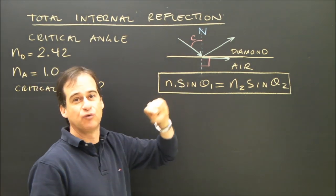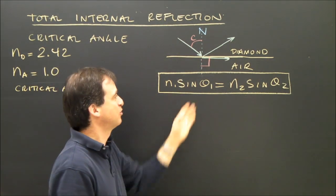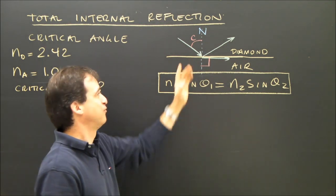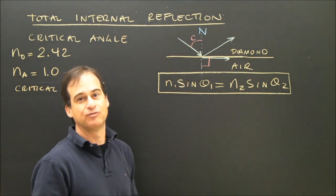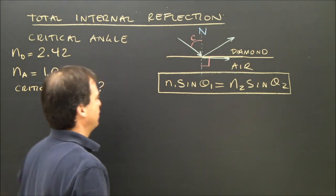So if the critical angle is 40 degrees, at 35 degrees, I do have refraction. At 41 degrees, 42 degrees, anything greater than 40, I have total internal reflection. So let's plug in this formula.